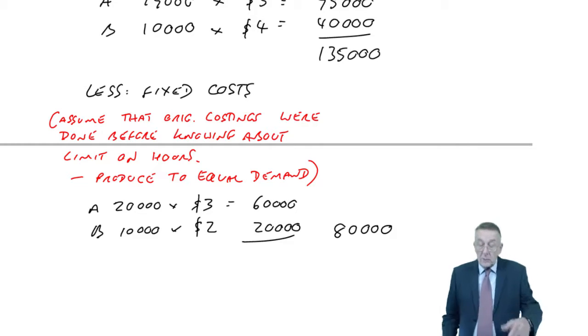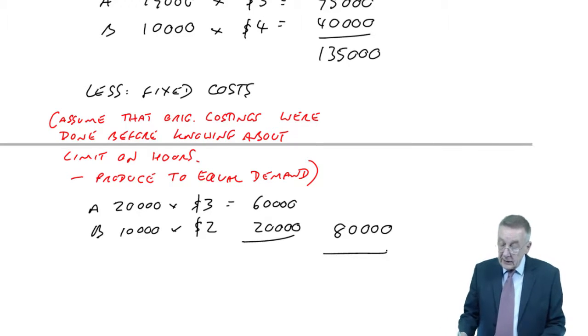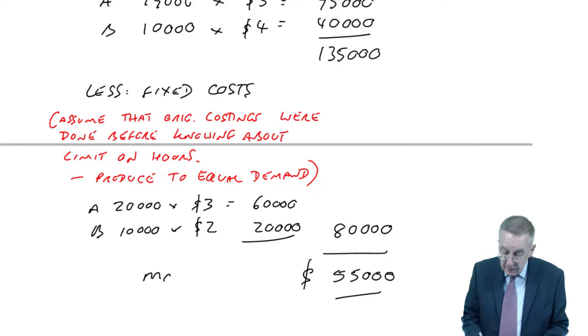Now I can work out the profit. The profit is $135,000 less $80,000. There is the maximum profit of $55,000.